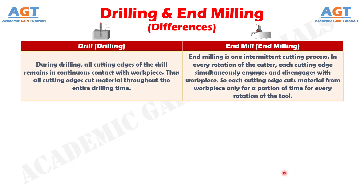Number ten: during drilling, all cutting edges of the drill remain in continuous contact with the workpiece. Thus all cutting edges cut material throughout the entire drilling time, whereas end milling is one intermittent cutting process. In every rotation of the cutter, each cutting edge simultaneously engages and disengages with the workpiece, so each cutting edge cuts material only for a portion of time per rotation.